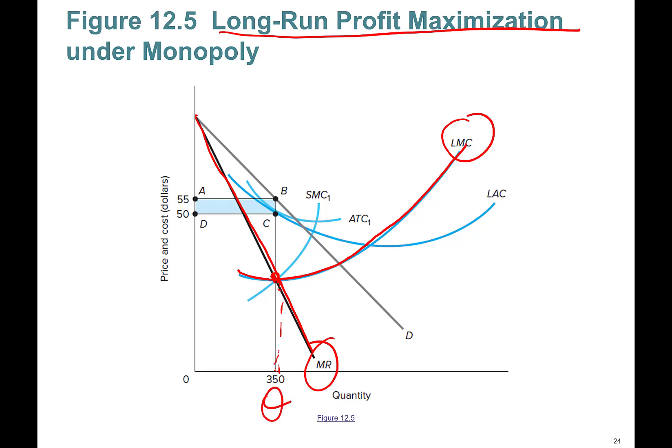350, go hit the price, price is here, 55. What's my average total cost? Long-run average cost, long-run average cost here, boom, 50. So this is average total cost, long-run average cost. So your profit is quantity times price minus average total cost, or long-run average cost. It's the same number. Price is 55, average total cost is 50, quantity is 350.